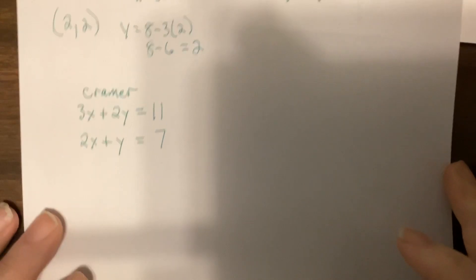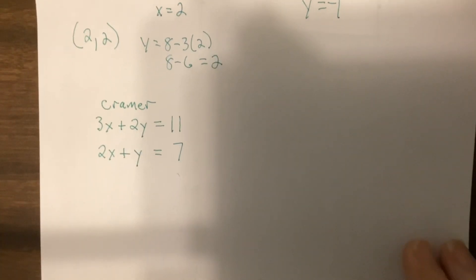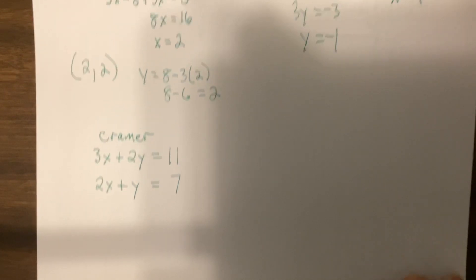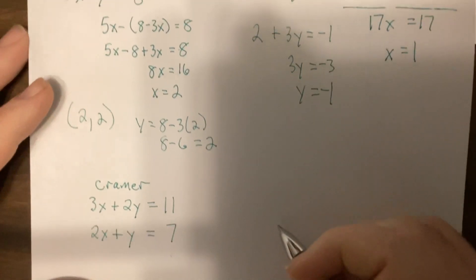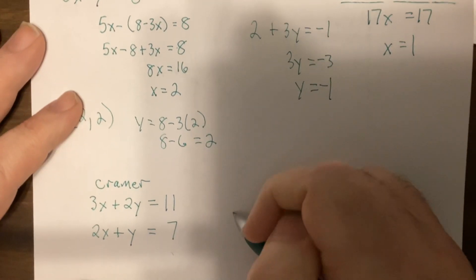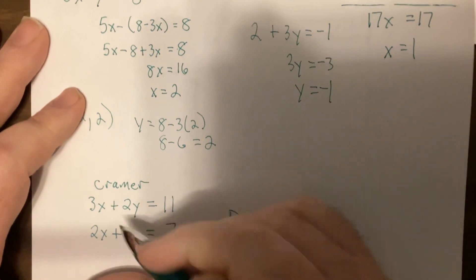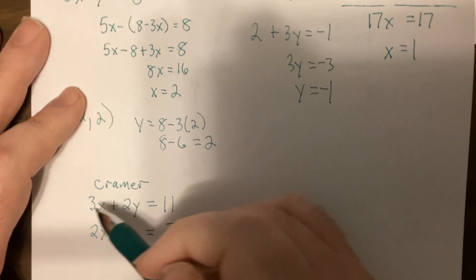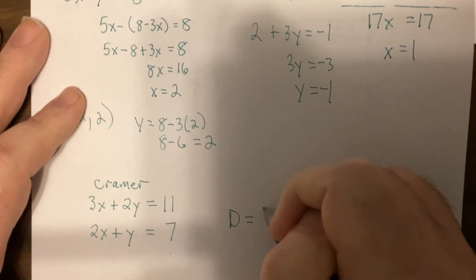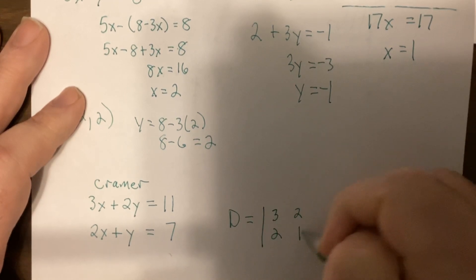Now the last one, do you remember Cramer's? So go ahead and freeze the video, do Cramer's, and then turn me back on. Okay, so first we find the big D. D, that's the determinant of these coefficients. So it'd be 3, 2, 2, 1. So it'd be 3 minus 4, which is negative 1.